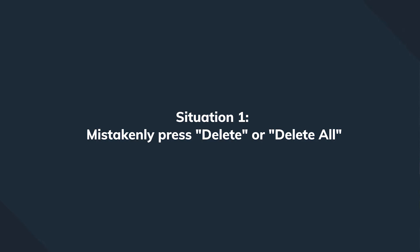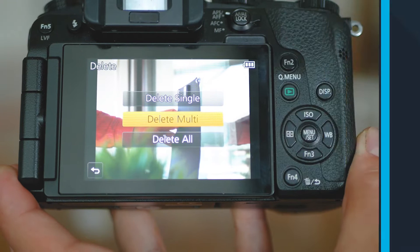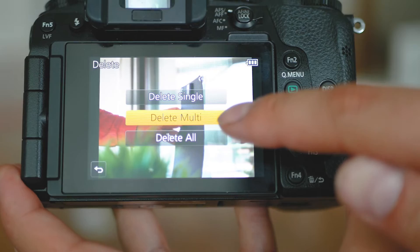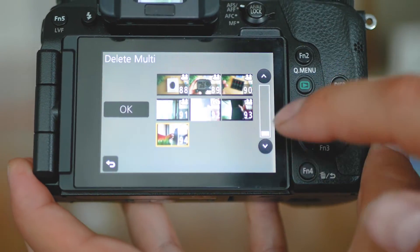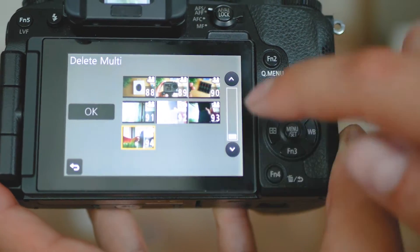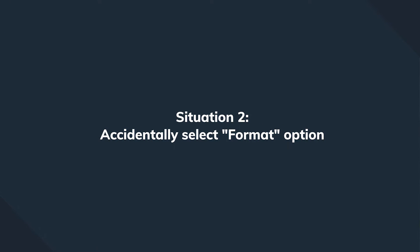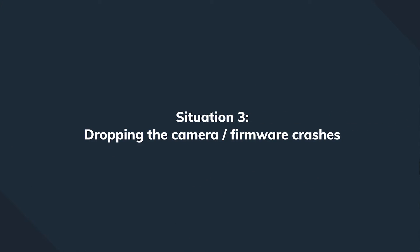Let's discuss a few situations which tend to permanently delete or corrupt files on your SD cards. In some unfortunate instances, we can mistakenly press the delete or delete-all button in the digital camera and permanently delete files. Sometimes things can go even worse if we use the format option from the camera, or accidentally from the PC where we try to copy the files to.